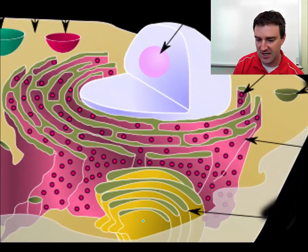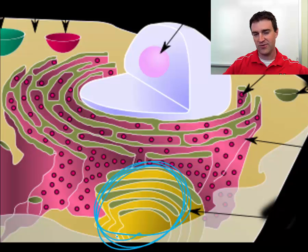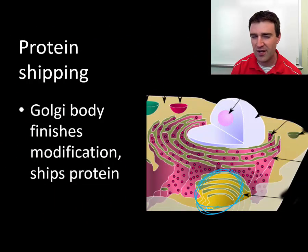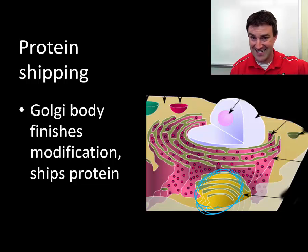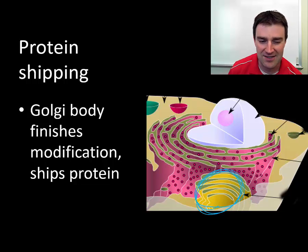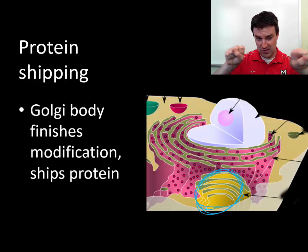The second organelle that finishes the process is a bit further away from the nucleus — that's the Golgi body or Golgi apparatus. The Golgi receives the protein after the rough endoplasmic reticulum, finishes modification by altering or adding to the protein, and then ships it to where it needs to go. In a larger and more complex cell, proteins need to be tagged to travel to a specific place. A helpful memory device: G-O-L-G-I is five letters, like a five-number zip code — the Golgi is like a post office sorting and shipping proteins to the right place.